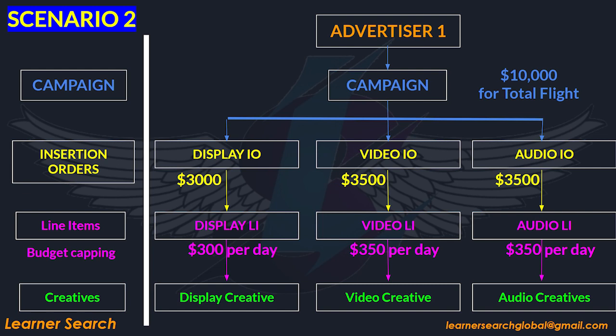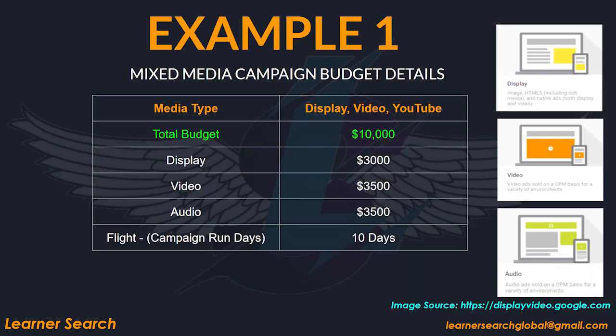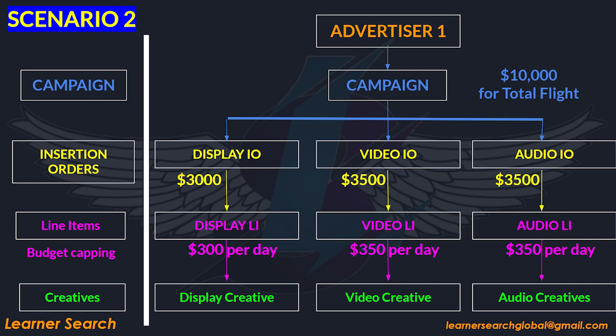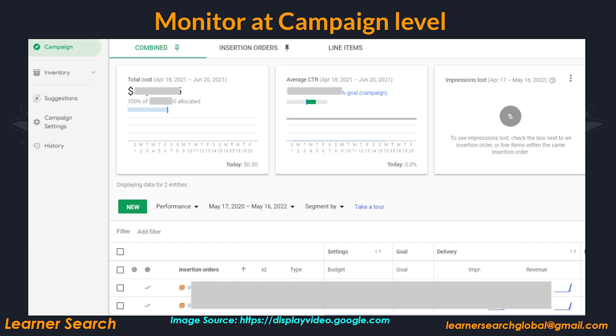Consider another scenario in which you may create all media types in DV360 under a single campaign, which is one of the finest ways to construct the setup according to our reference media plan. In this second scenario, create a single campaign and then proceed with the rest of the setup as in the first scenario. With this campaign setup structure, you can track the delivery of all 3 IOs under the respective campaign while also monitoring the campaign's overall performance. This slide shows a combined view of IOs and line items under a single campaign, where you can monitor delivery and performance of each IO.